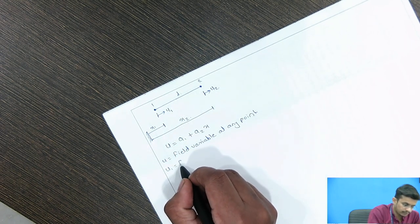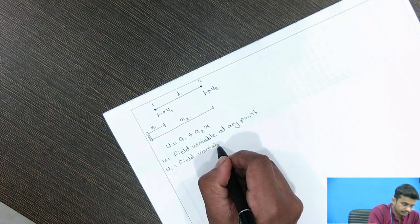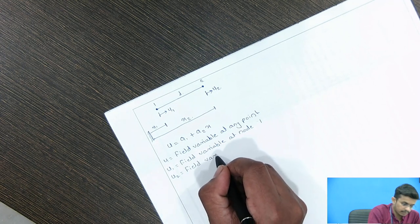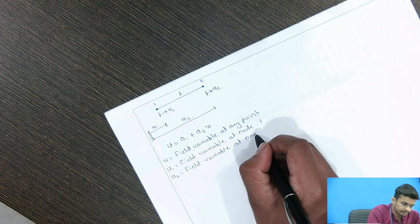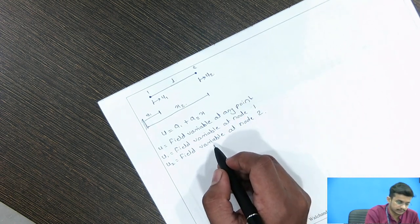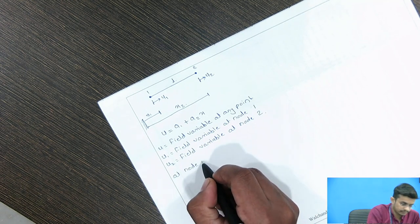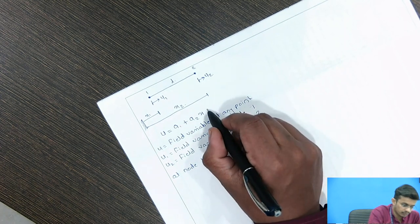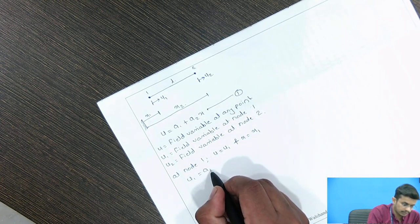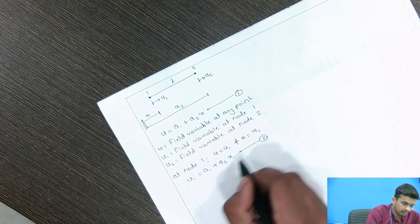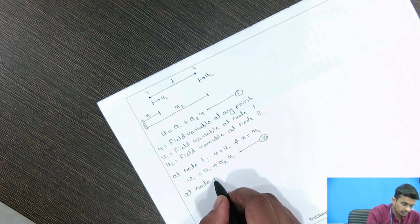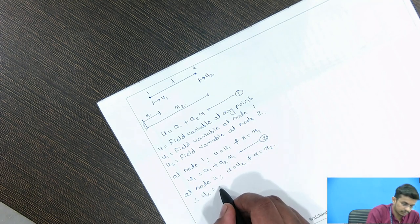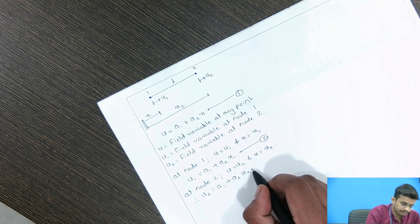U1 is the field variable at node 1, and U2 is the field variable at node 2. After applying the boundary conditions at node 1, U equals U1 and X equals X1, so equation 1 becomes U1 equals A1 plus A2 times X1 — this is equation 2. At node 2, U is U2 and X is X2, therefore U2 equals A1 plus A2 times X2 — this is equation 3.